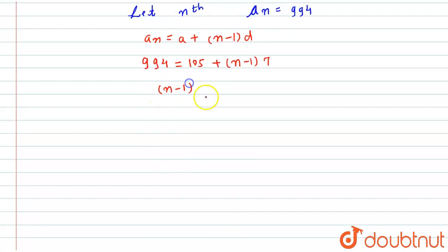Now here I will subtract 105 from 994, so it will be nothing but 889 divided by 7. Okay, so (n - 1) will be equal to this one, and this will be equal to 127. So from here I will get the value of n, that is n is equal to 127 plus 1, which will be equal to 128.